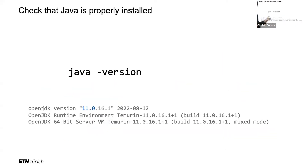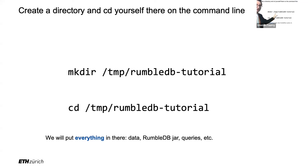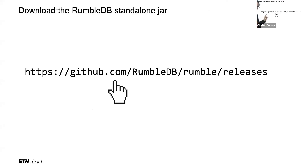I'm assuming you have Java installed. You can quickly test it by typing `java -version` in your command line and checking that version 11 comes out. Technically it will probably work with Java 8 as well, but Spark documents Java 8 or 11, so I'm focusing on 11 today. I'm also assuming you created a directory on your laptop — for example `/tmp/rumbledb-tutorial` — and that you've changed into that directory. We'll put the data, the RumbleDB JAR, and the queries all there.